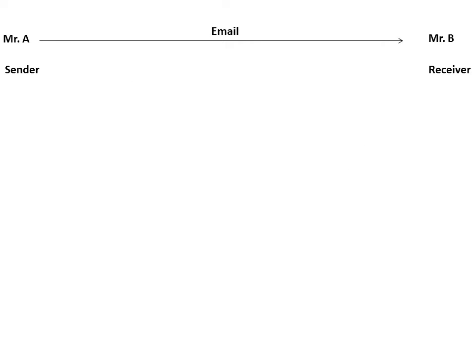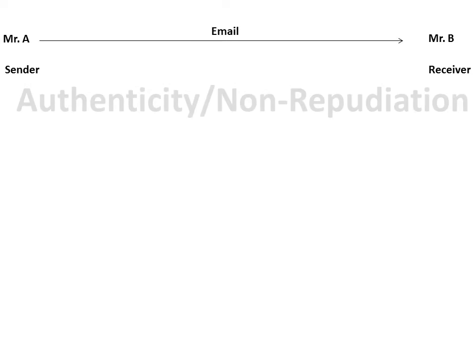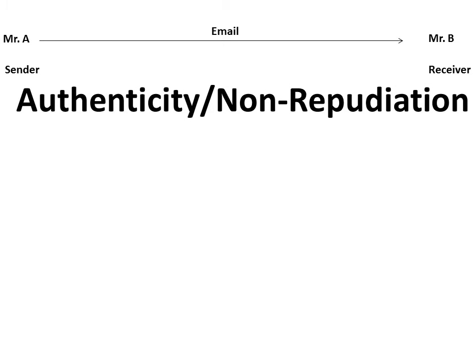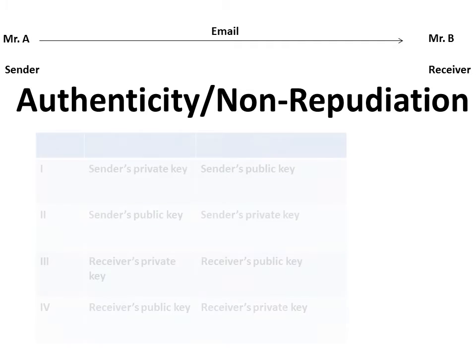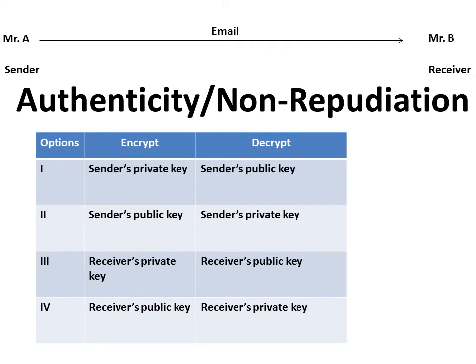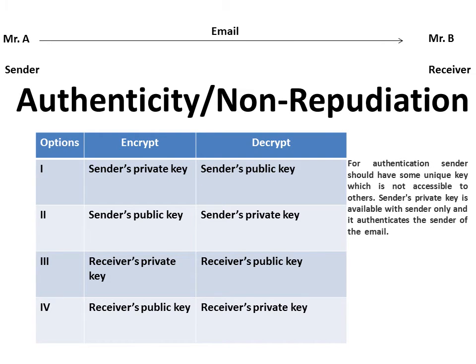Now, Mr. A wants to send an email to Mr. B, but he is not concerned about confidentiality. What he wants is authenticity and non-repudiation. For authenticity, the sender should have something unique that is not available to anyone else — a unique key not accessible to others. The sender's private key is the only thing available to the sender alone, and it authenticates the sender of the email.